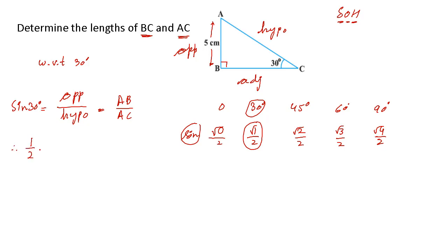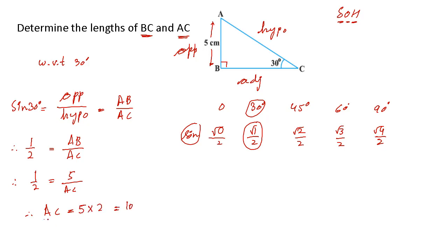So 1/2 equals AB divided by AC. The value of AB is given as 5 centimeters, so 1/2 equals 5 divided by AC. Cross-multiplying, AC (the hypotenuse) will be equal to 5 multiplied by 2, which is 10. Don't forget to write the units: AC equals 10 centimeters. Now let's find the value of the adjacent side.